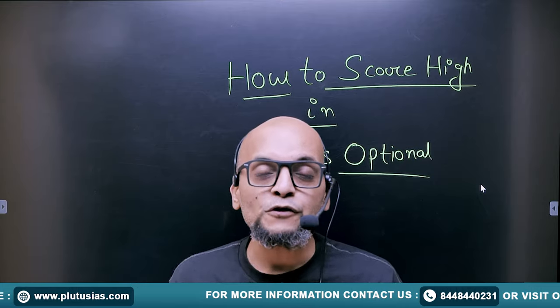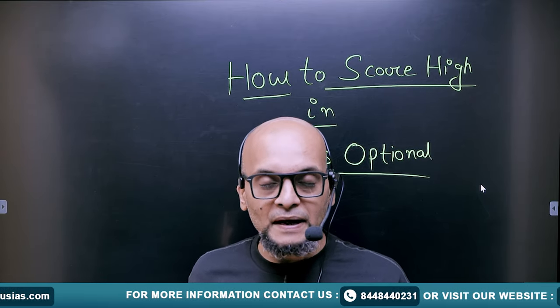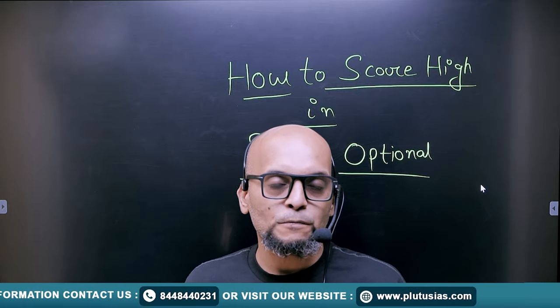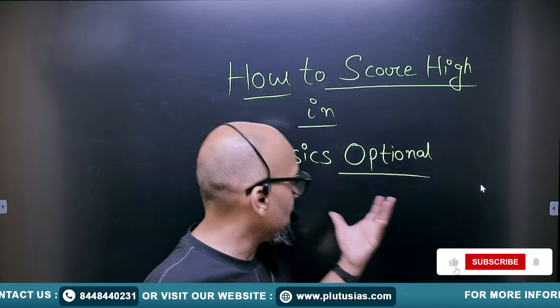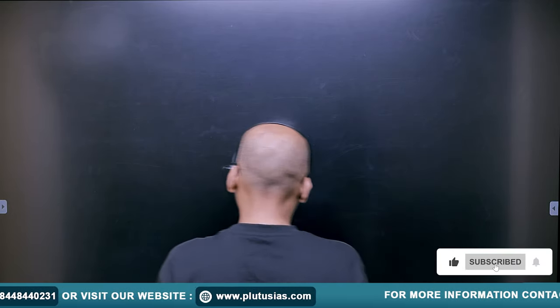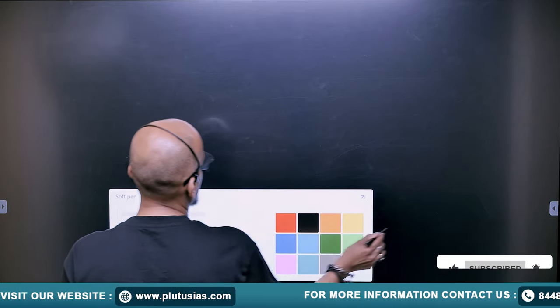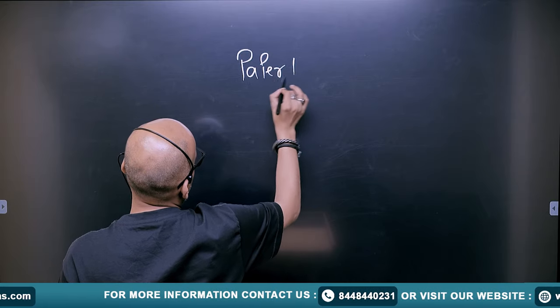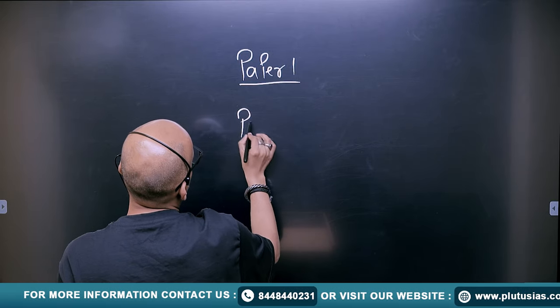So what should one do? What methods one should follow to score good marks or good percentage in Physics Optional? Let's see. As you all are aware that just like any other optional subject, Physics is also segregated into two portions that is Paper 1 and Paper 2.